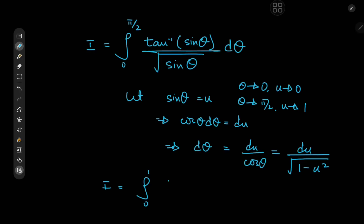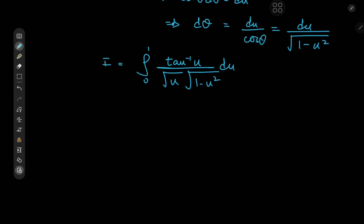So i in the u world is now an integral from 0 to 1, which is pretty nice. We have the integral from 0 to 1 of inverse tangent of u divided by root u, with du, and this factor of 1 minus u squared in the denominator as well. What I'm about to do now might not seem very intuitive at first sight, but hindsight is 20-20 — let me walk you through the steps.